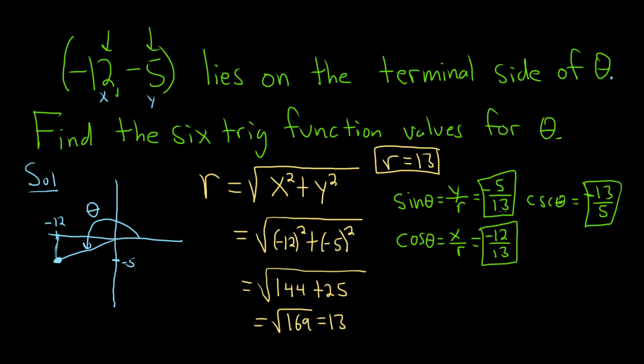And the reciprocal of cosine is again the one that starts with the other letter. So that will be secant of theta. And so to find it you just flip it. So you get negative 13 over 12. And that would be the answer there.